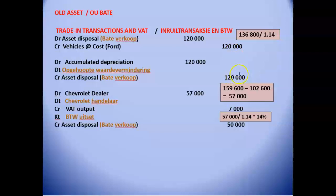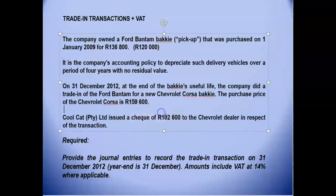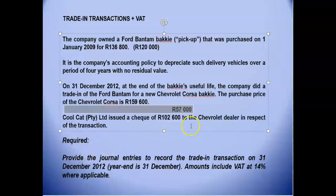Now, how much did we receive for the old asset? The new asset cost $159,600 but we only paid $102,600. The difference — $159,600 minus $102,600 — gives us $57,000. If these two transactions were not related, you would have paid the dealer $159,600. So by implication, the $57,000 is the amount received for the old Ford Bakkie that was traded in — that is the proceeds.